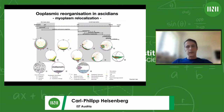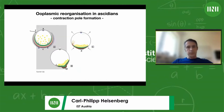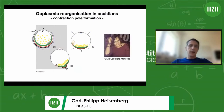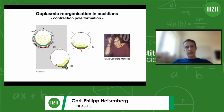We thought this was an interesting and testable proposal. This is then the work that Silvia Caballero, a PhD student in the lab, took on. She wanted to understand how the myoplasm actually accumulates at the vegetal pole of the oocyte, how it leads to the formation of the contraction pole, and eventually patterning of the oocyte.